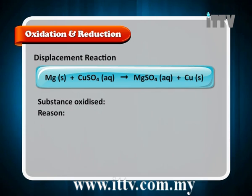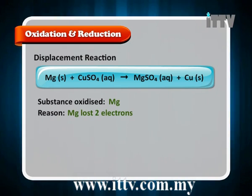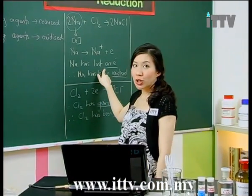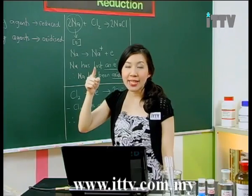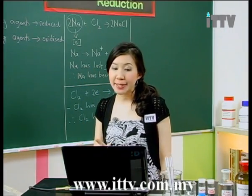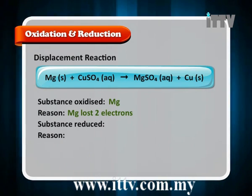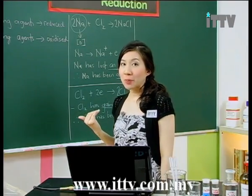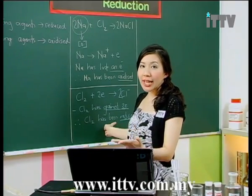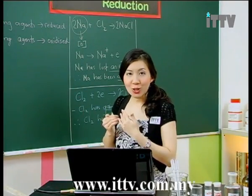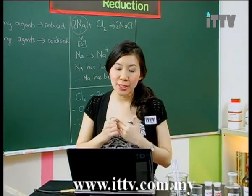The substance oxidised is magnesium, because magnesium has lost electrons. If an element or compound has lost electrons, we say it has been oxidised. The substance reduced is copper(II) ions (Cu²⁺), because Cu²⁺ has gained electrons. Any element or compound that gains electrons has been reduced — so because Cu²⁺ has gained electrons, Cu²⁺ has been reduced.